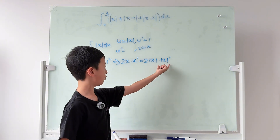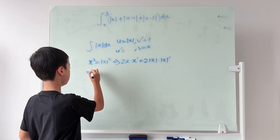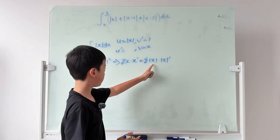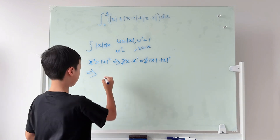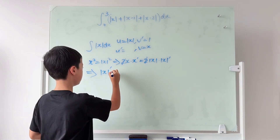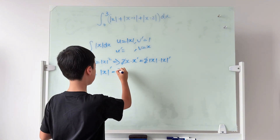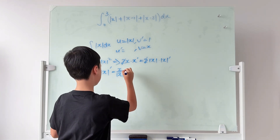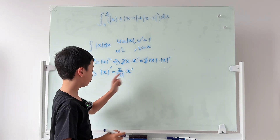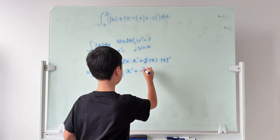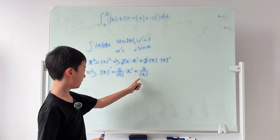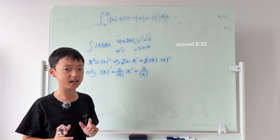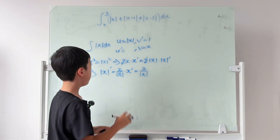We have what we want. Cancel the 2 and divide by |x| to get: the derivative of |x| equals x over |x|, multiplied by x'. Since x' is just 1, this simplifies to x/|x|. I wrote x' explicitly because we'll generalize this formula later.